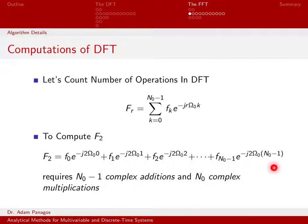Similarly, I have additions going on. There's an addition here, and an addition here, and an addition here. There's basically a complex addition between each one of these terms. So when I go and I compute F2, I need N0 minus 1 complex additions to perform this operation. So to compute F2, I have to do N0 minus 1 complex additions and N0 complex multiplications.